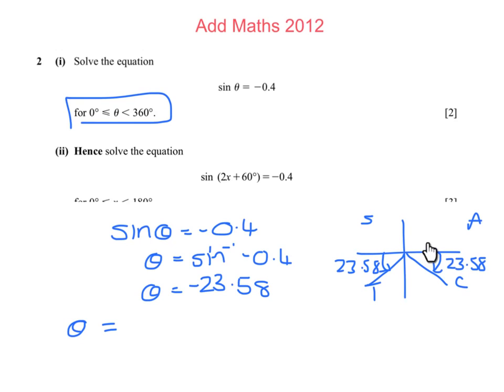So the first angle I have is 180 plus 23.58. So that's 203.58 and the second angle would be 360 take away the 23.58 which gives me a second answer of 336.42.